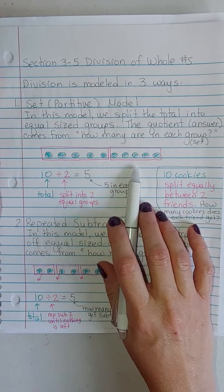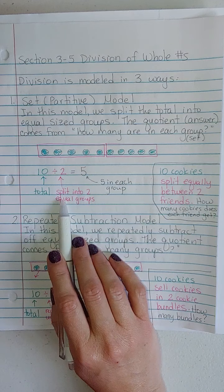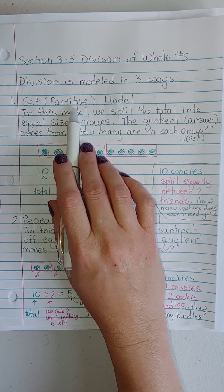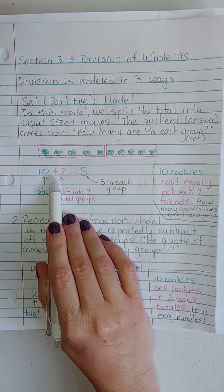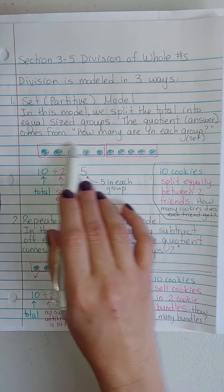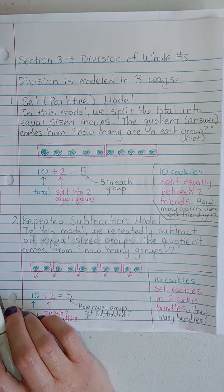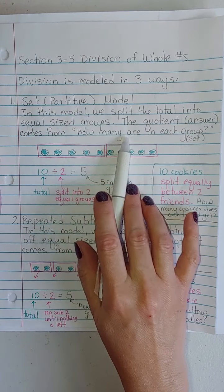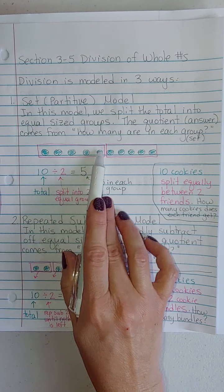I went ahead and tried to do a color-coded example here for you. 10 divided by 2, if you looked at this in terms of a partitive model, that would be 10 total divided or split into two equal sized groups. You can see in pink that's split into two equal sized groups. The quotient is how many are in each group. In this case, there are five in each group.